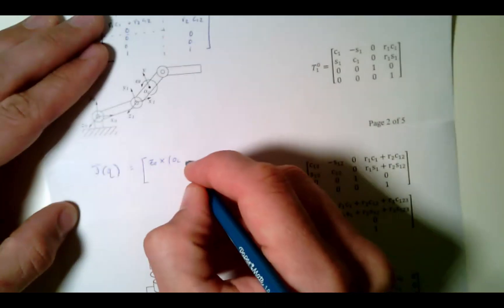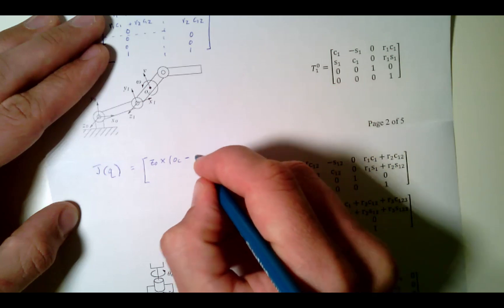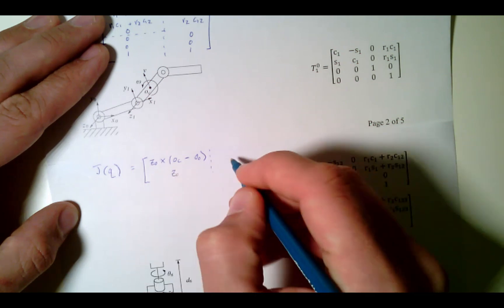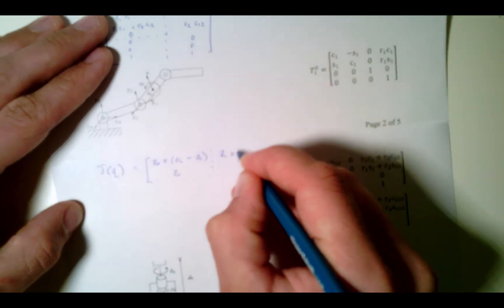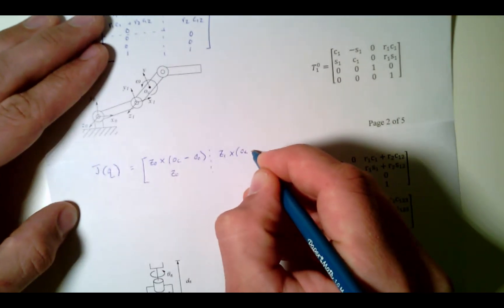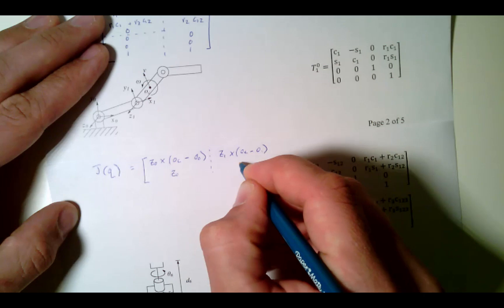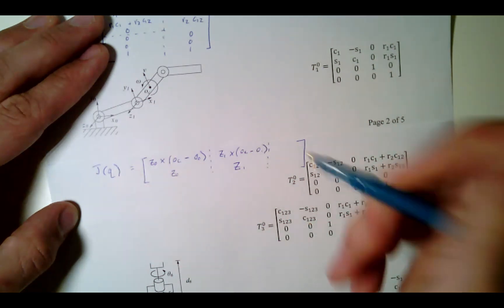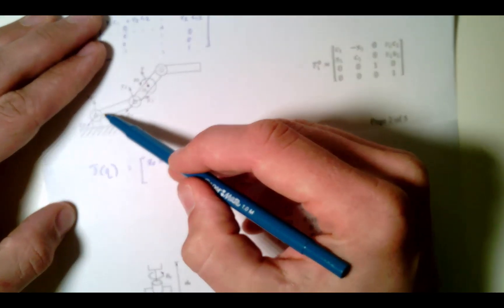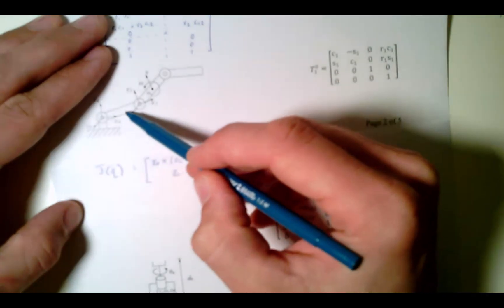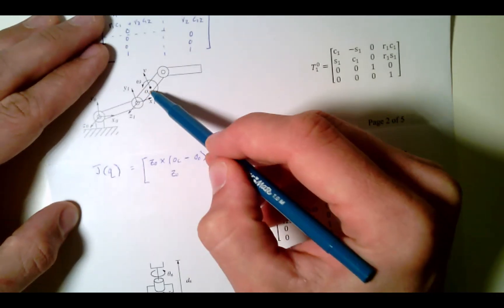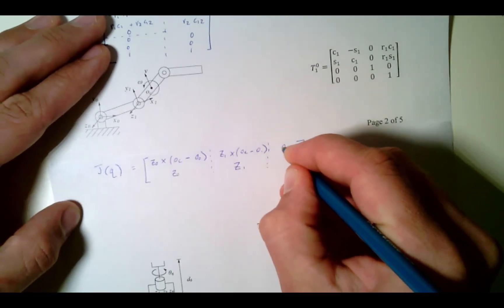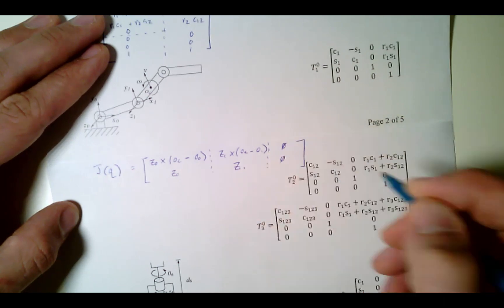Our Jacobian J(q) for this case — I've got three revolute joints. The first column will be Z0 cross OC minus O0, rotated around Z0. The next column is Z1 cross OC minus O1, and then Z1. For the last column: we can use a Jacobian to find the speed of any point, but the third joint doesn't affect OC, so that column is just the zero matrix.